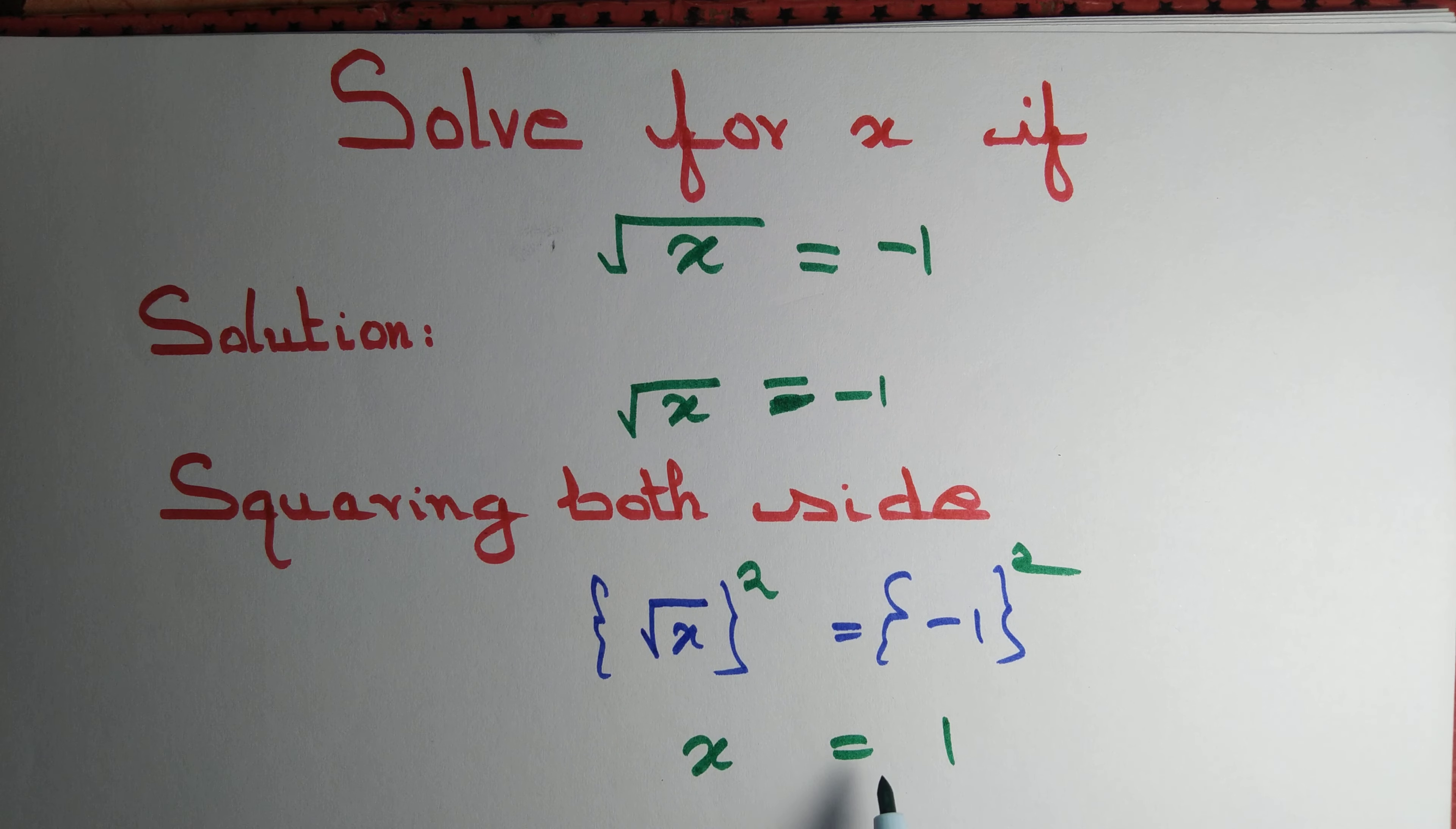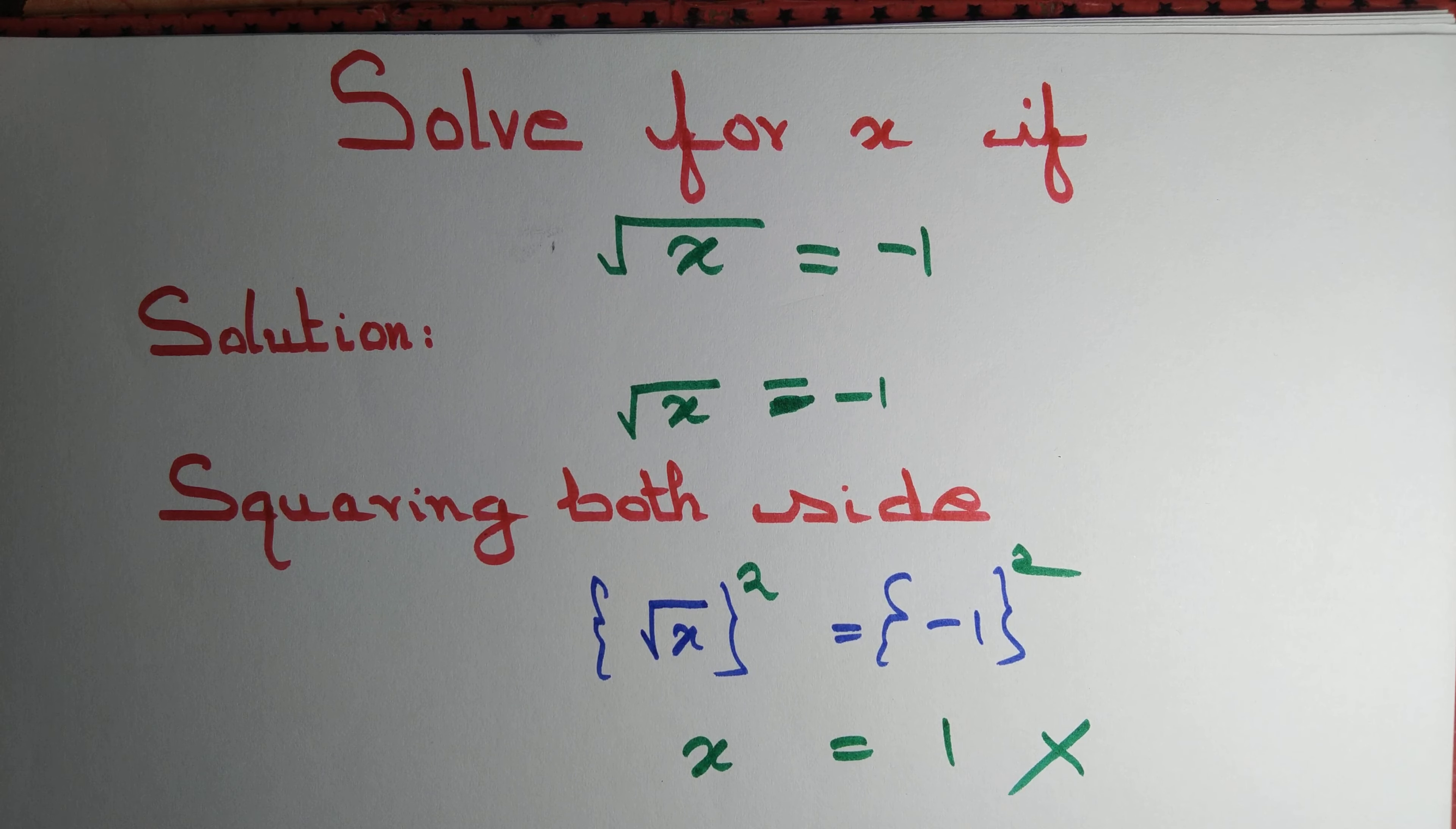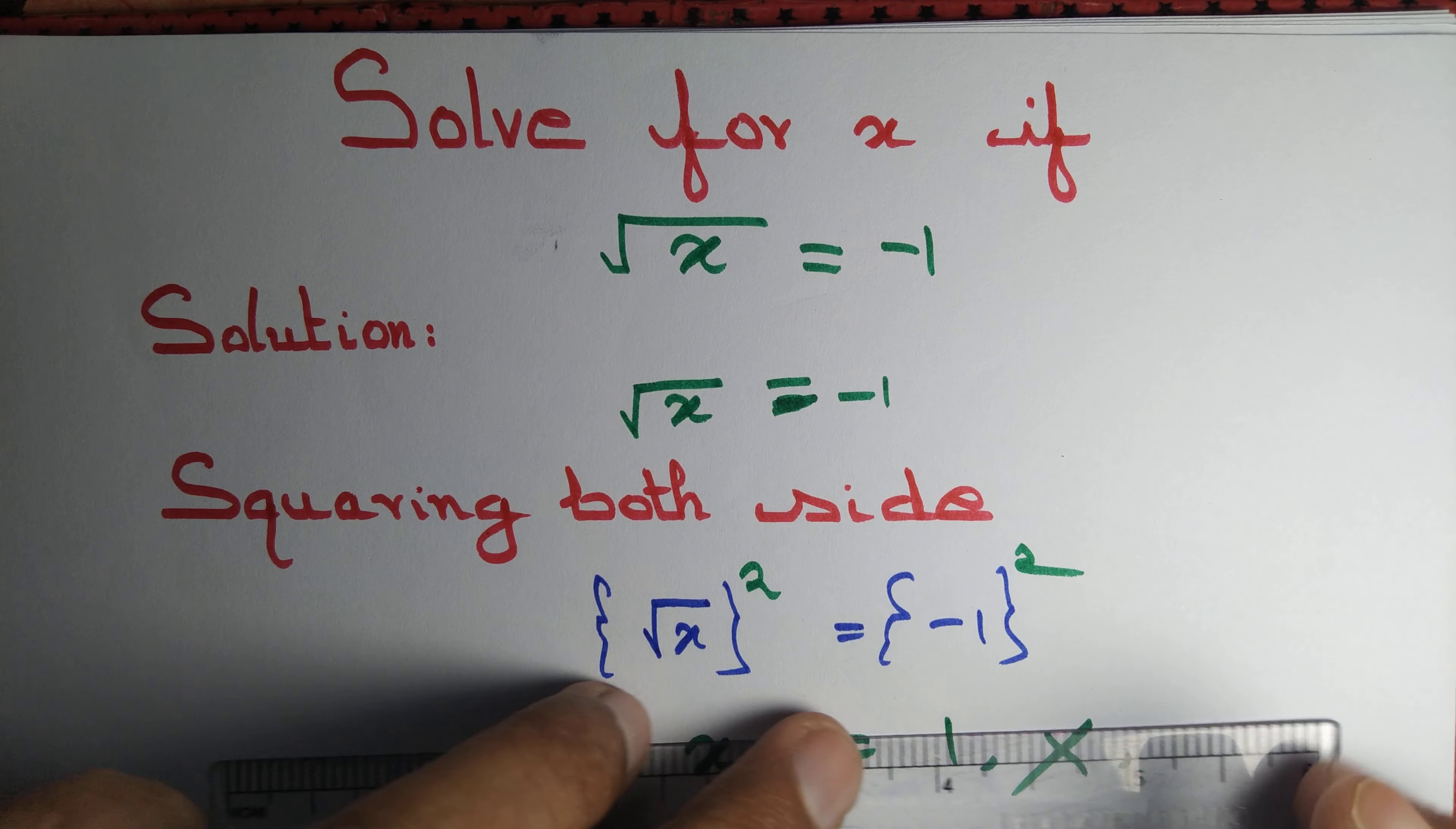So you may write that x = 1 is a solution of this equation, but it's wrong. What's wrong with the statement that x = 1 is a solution?